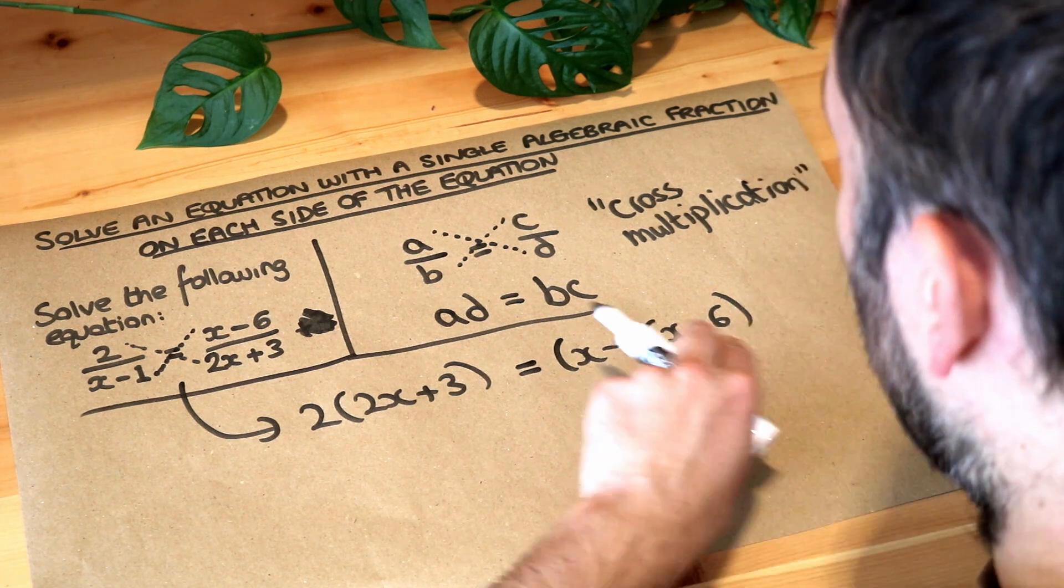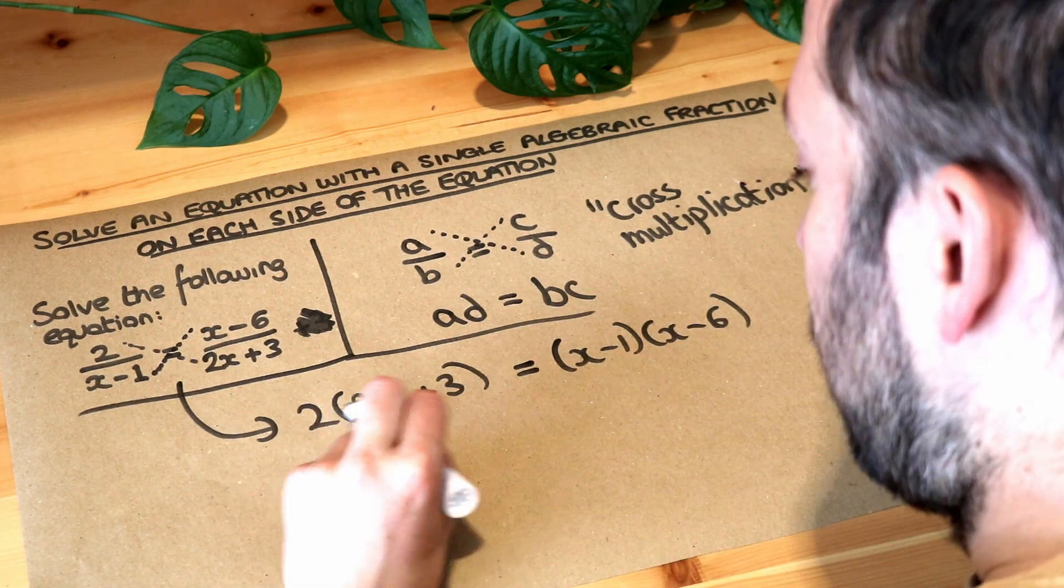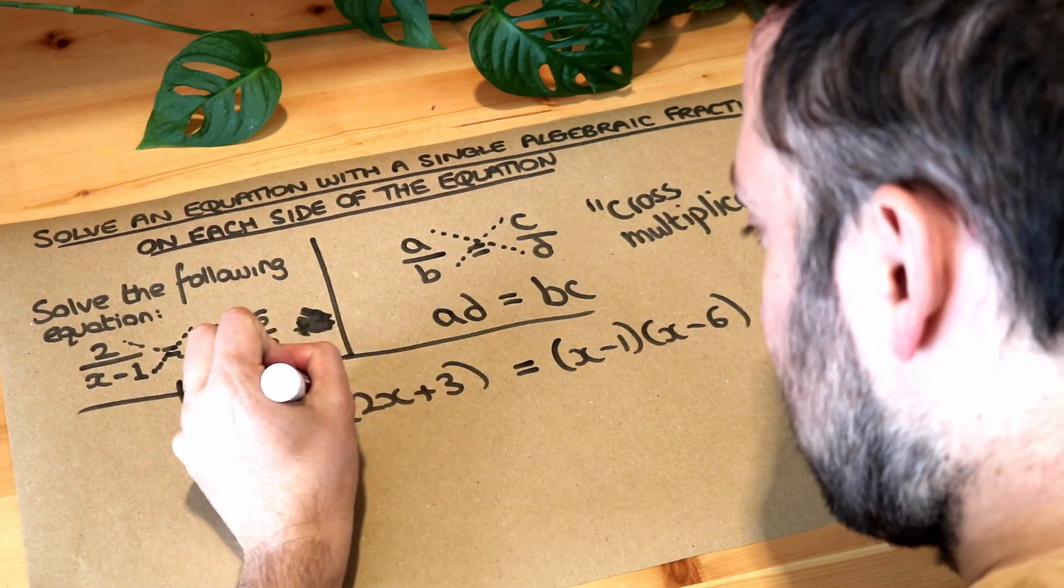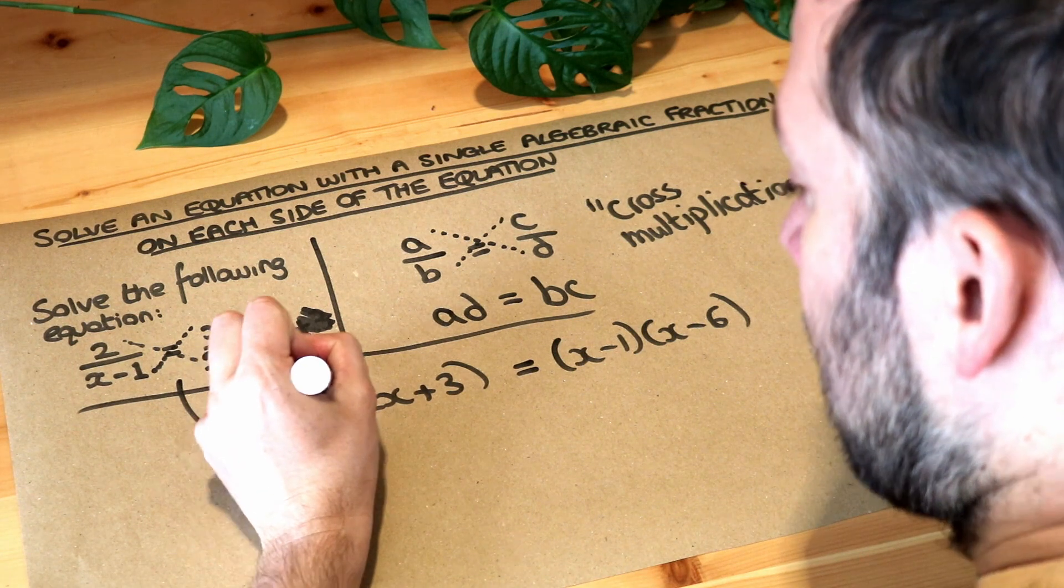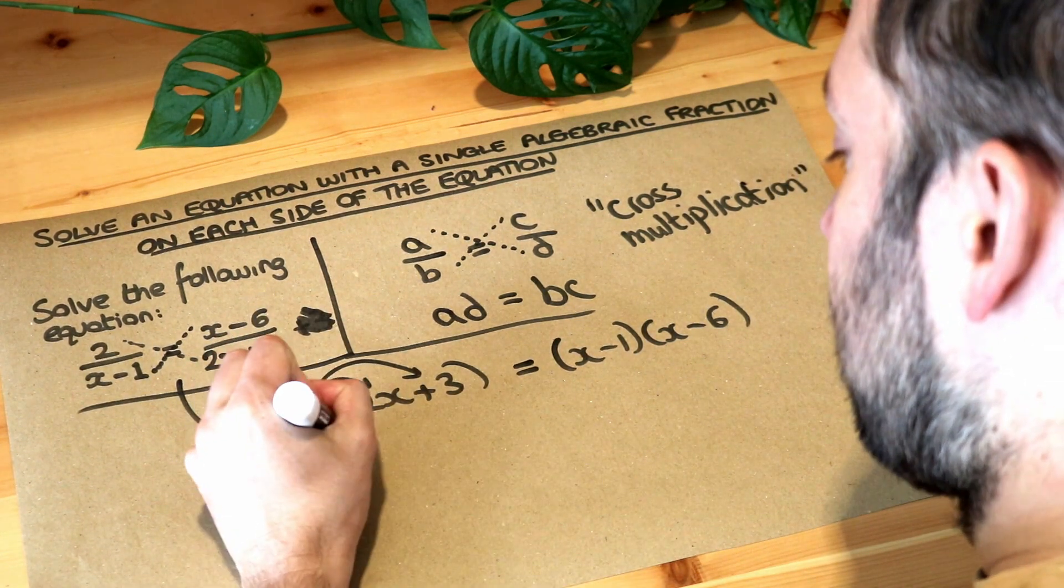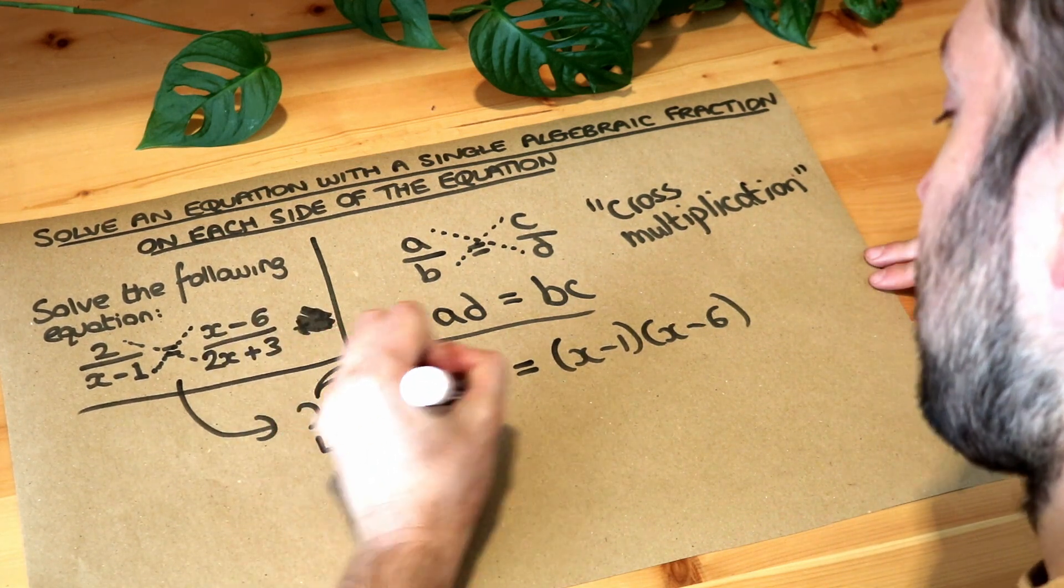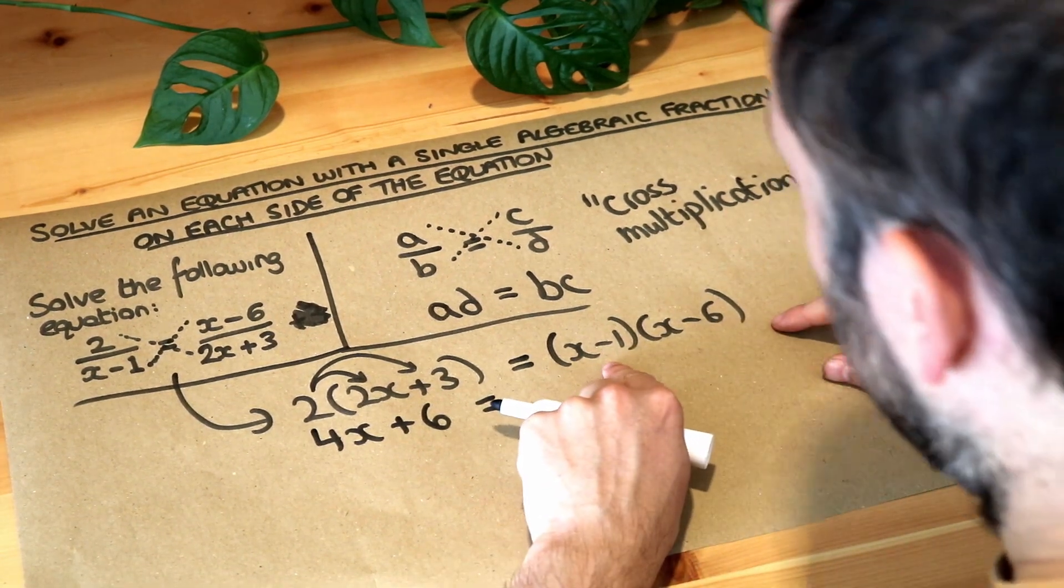So what should we do now? We've got some brackets so our instinct might be to multiply out these brackets. We've got a single bracket here expansion so we do the thing on the front of the bracket times each of the things inside. You do 2 times 2x is 4x and 2 times 3 is plus 6.